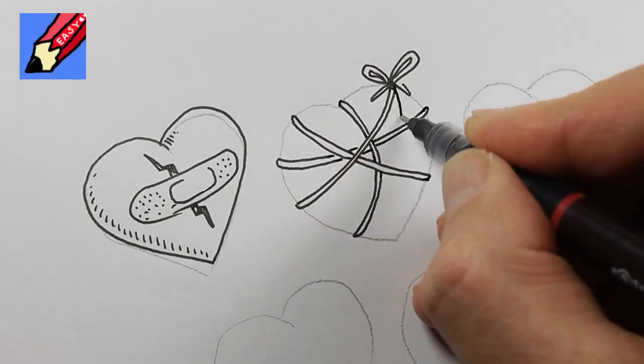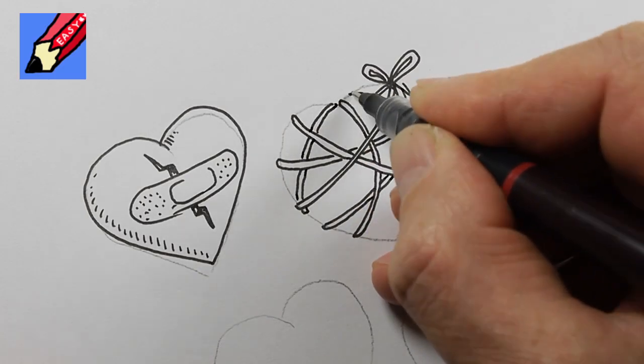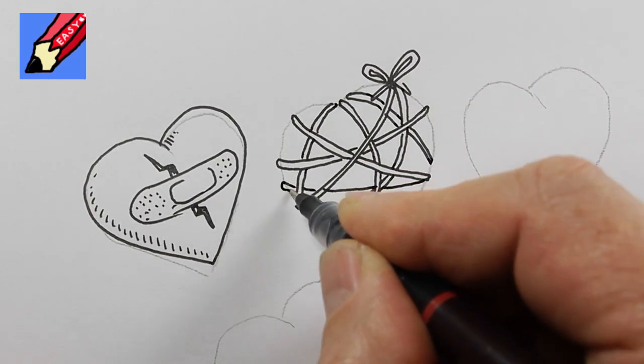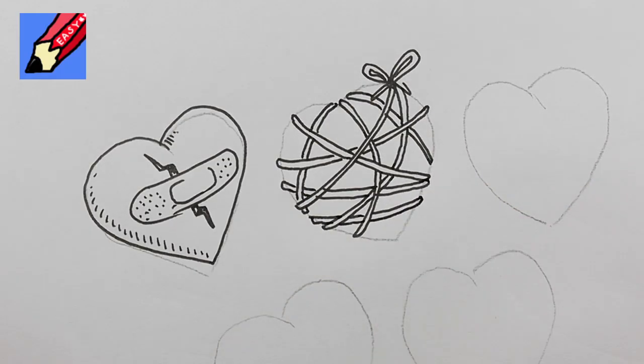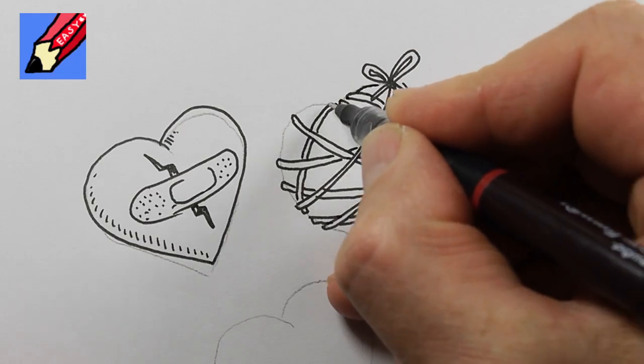You might find it easier to draw these strings in pencil first and erase them afterwards, and then you can weave them in underneath each other. At the moment I'm just putting one on top, one behind another.